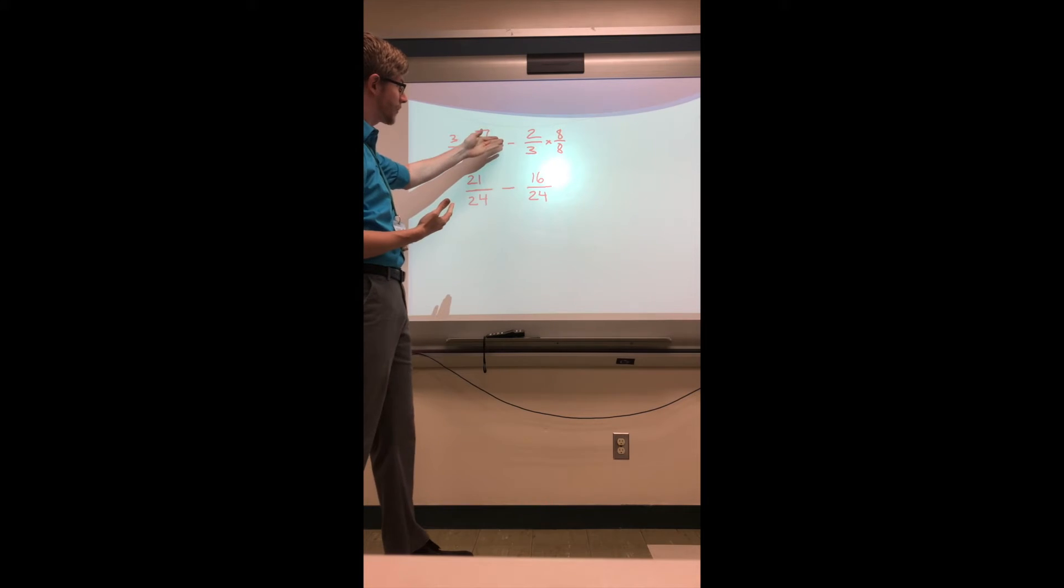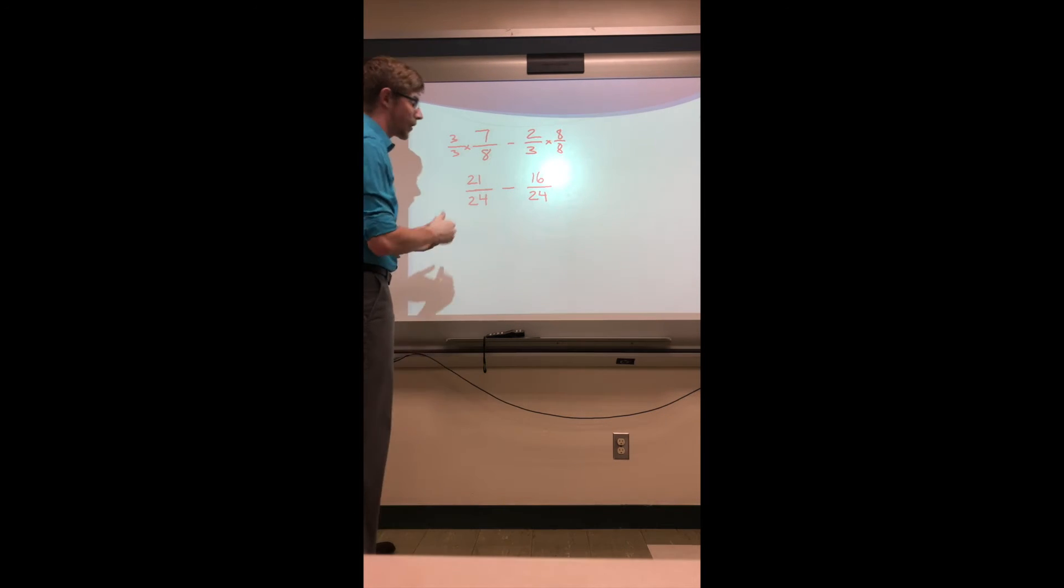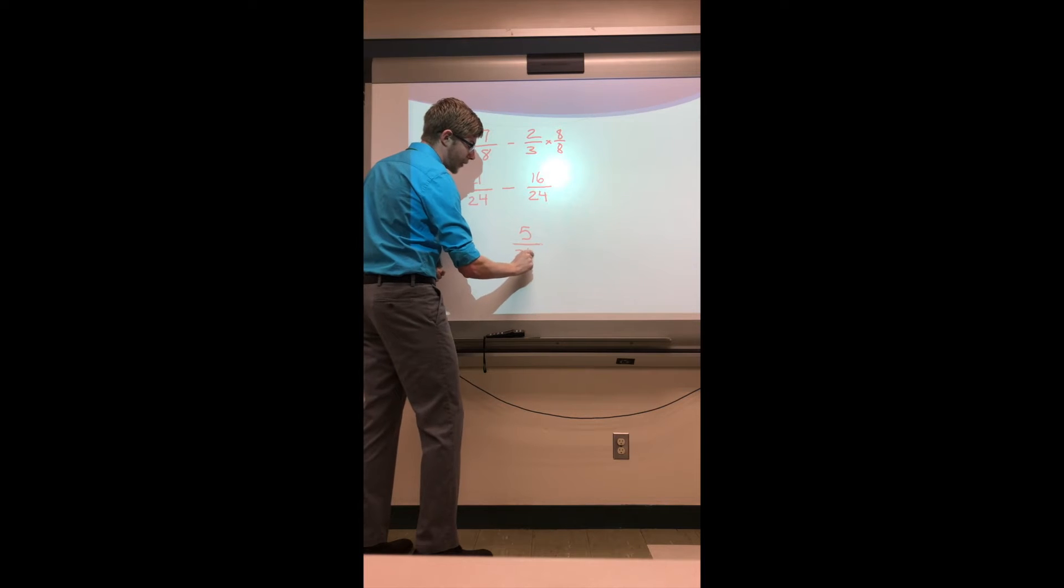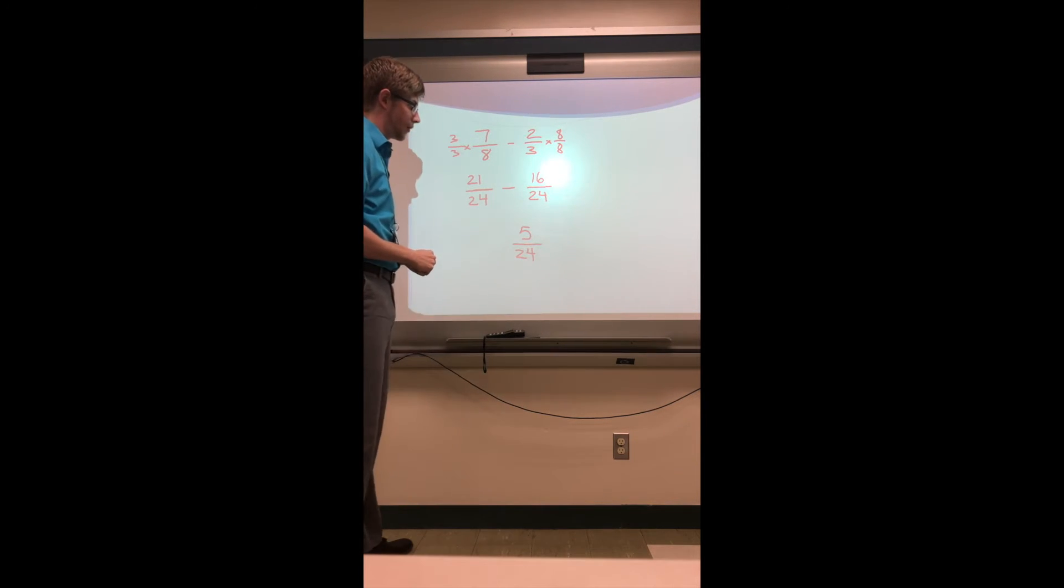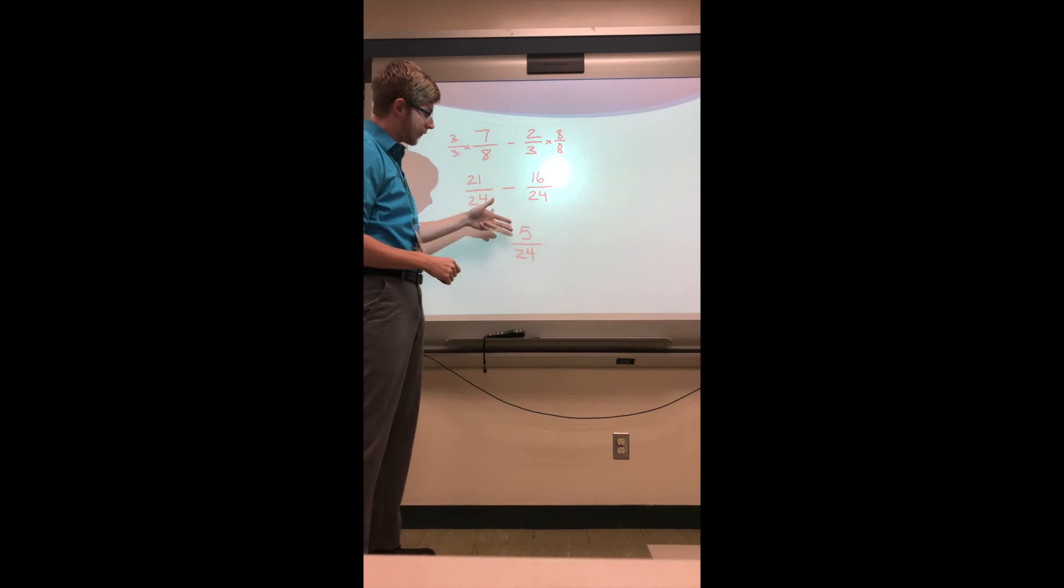Step two then was to add or subtract. Well, in this problem obviously you can see that it's subtraction, so again I'm going to add or subtract the numerators. So here I'm going to subtract this: 21 minus 16 is 5. Five over 24 then becomes my answer.